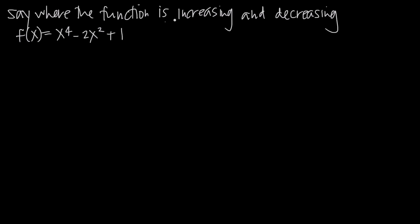When we talk about increasing and decreasing, we're talking about if we graphed this function, where would it be moving up — that would be increasing — and where would it be moving down — that would be decreasing. The way we're going to do that is by finding critical points and then testing those critical points using the first derivative test.